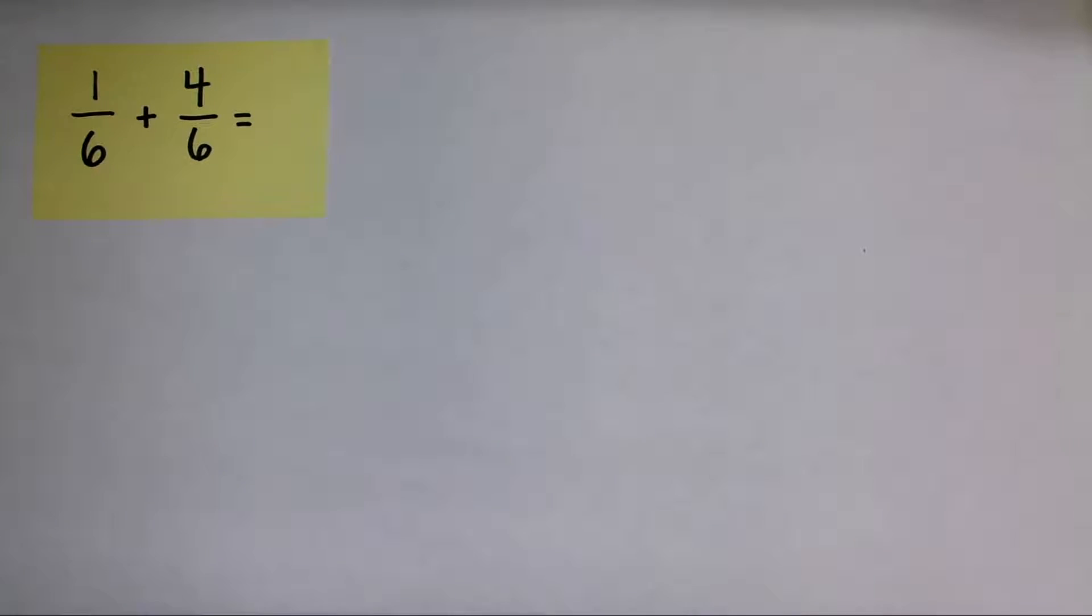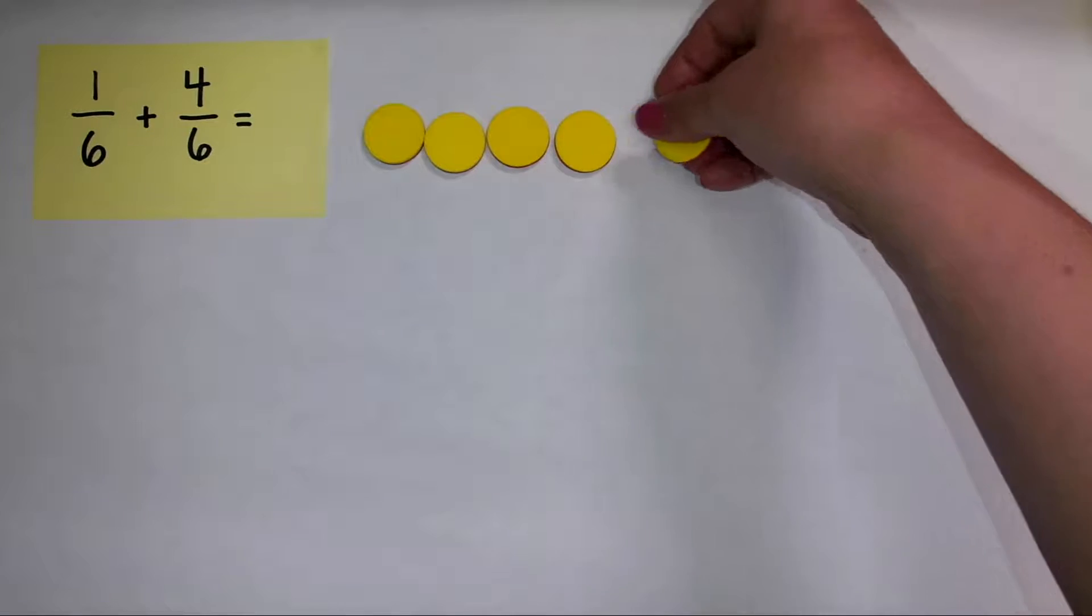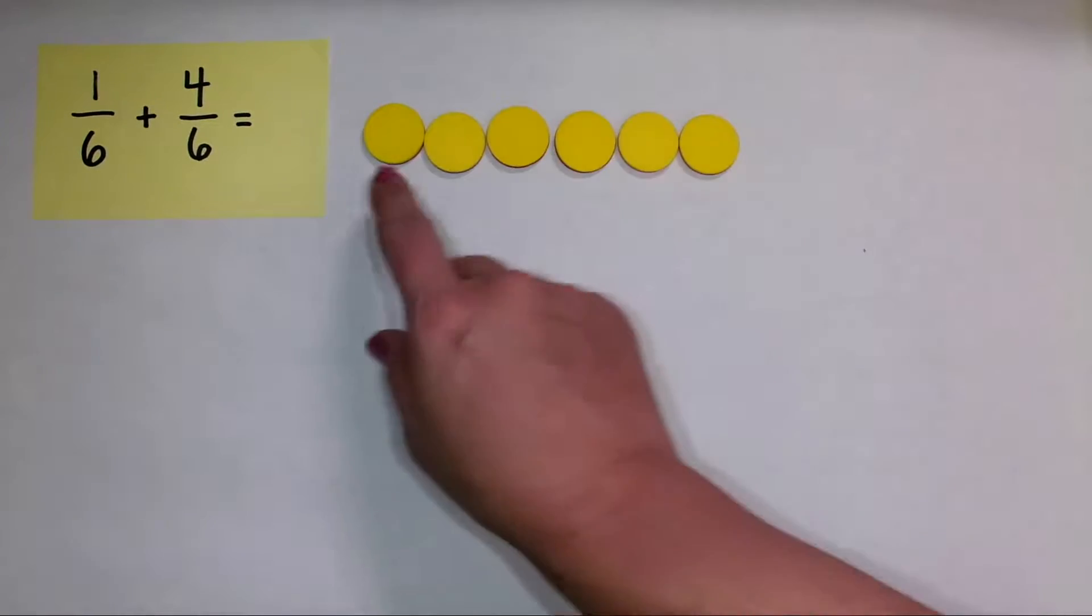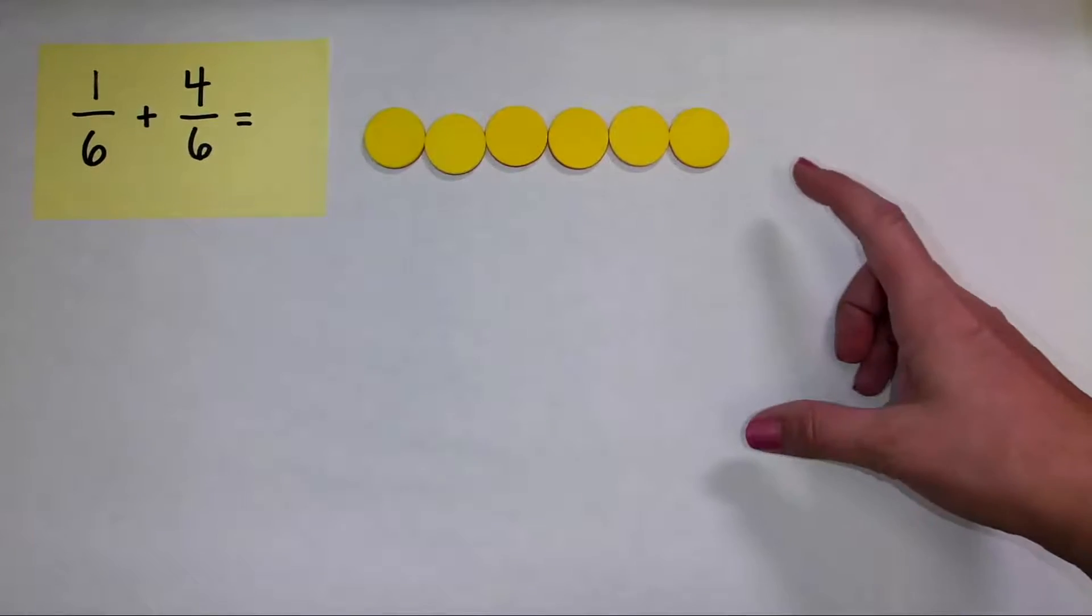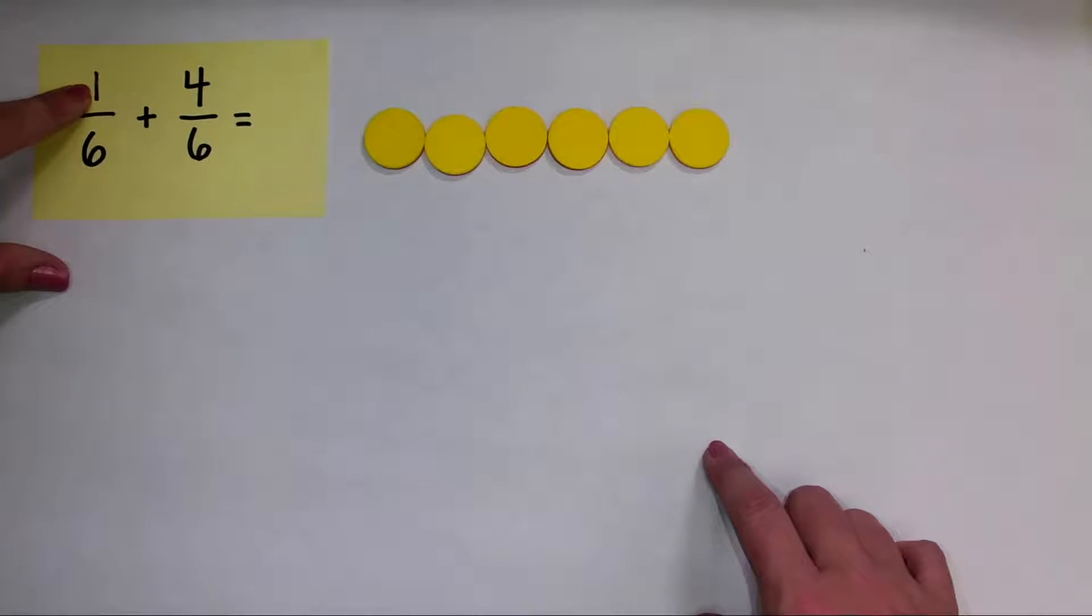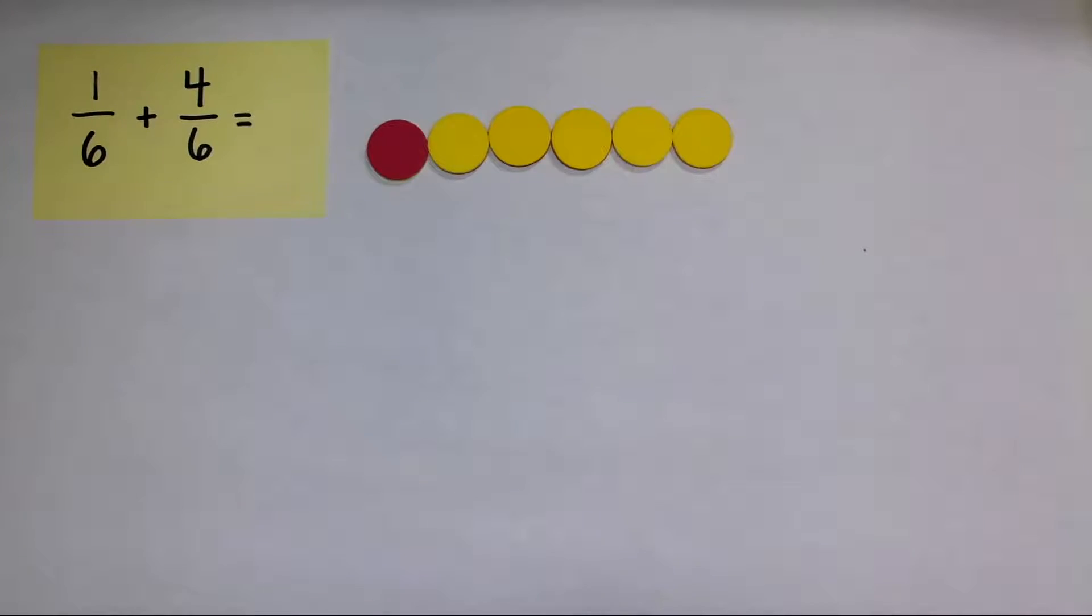Now, I'm going to set these up with my two-color counters. So I have fractions with a denominator of six. So that means I'm going to get out six of these counters, and I like to place them together so that I see that this is one whole or one set. And I need to show a numerator of one. So I'm going to show one of the six counters as red.